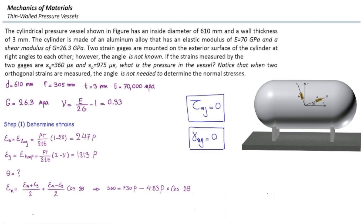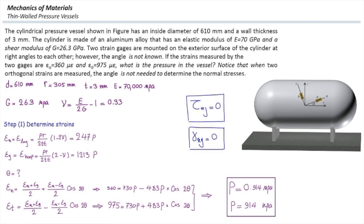But we can form another equation by epsilon t. Again, in that equation, p and theta are unknown. So we have two equations, two unknowns that could be solved for determining theta and p. In this case, p is 914 kilopascals. But this is not the easy way to solve this.